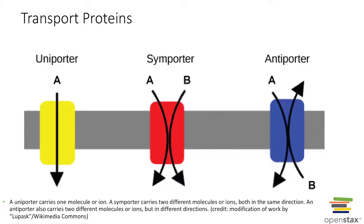There are different proteins involved in transportation. A uniporter carries just one molecule — it moves one molecule in or out. Proteins that carry two things can be either a symporter or an antiporter. A symporter carries two different molecules in the same direction — for example, sodium and glucose both entering the cell. With an antiporter, one thing is brought inside and one thing goes outside, like the sodium-potassium pump pumping sodium out while bringing potassium in.